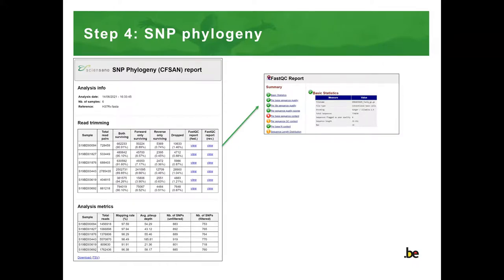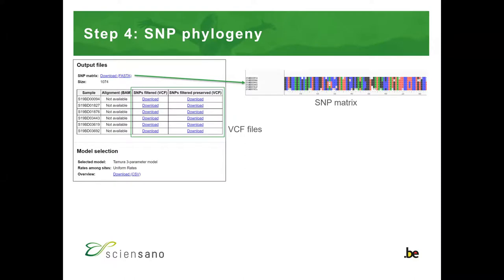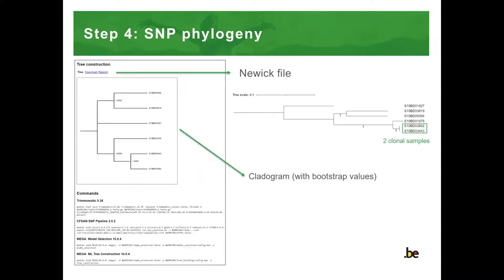Then we have a table with some statistics, such as the sequencing depth, the mapping rates, and the number of SNPs, which can also be downloaded separately in TSV format. Then we have a section with the SNP matrix, the VCF files, and also the results of the model selection. Lastly, we have the resulting phylogenetic tree in Newick format, and this is also represented as a clade diagram with bootstrap values in the output report.